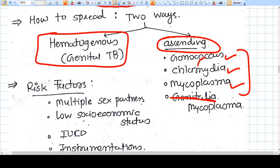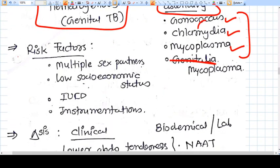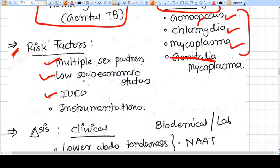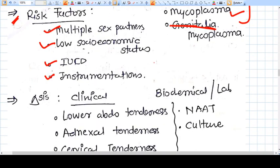What are the risk factors for PID? Multiple sex partners, low socioeconomic status, IUCD (intrauterine contraceptive device), and any instrumentation. This clearly says that the ascending route is more favored, and in low socioeconomic status groups we have higher prevalence of TB, which explains the higher incidence in this group.